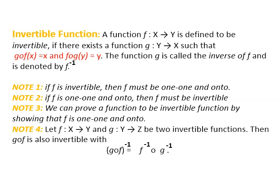Coming to the next point: invertible functions. A function f from X to Y is defined to be invertible if there exists a function g from Y to X — so the first one is from X to Y, then the invertible function is from Y to X, that's the inverse — such that gof(x) = x and fog(y) = y. Then the function g is called the inverse of f and is denoted by f inverse.